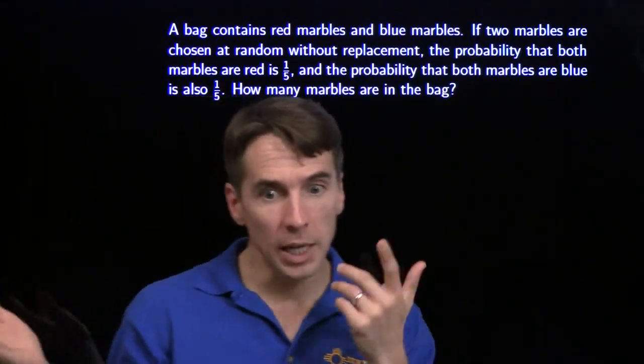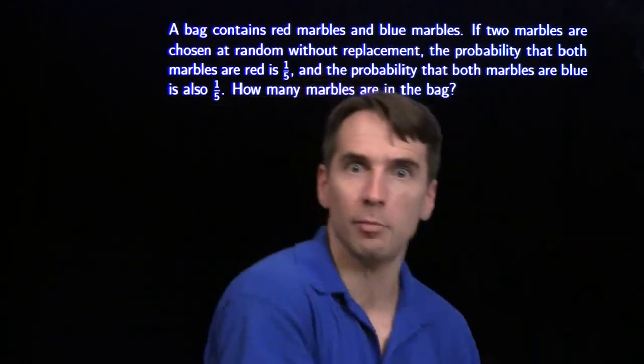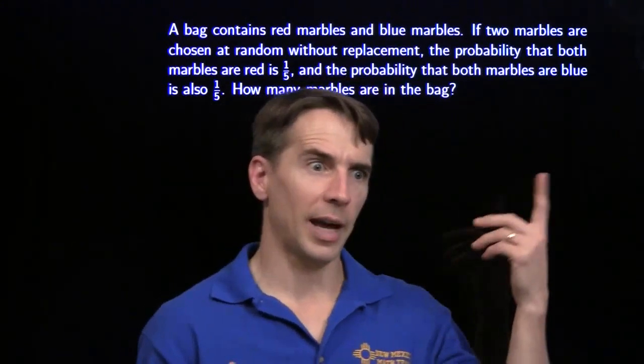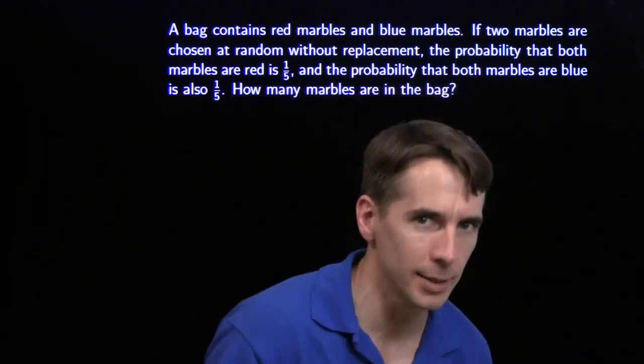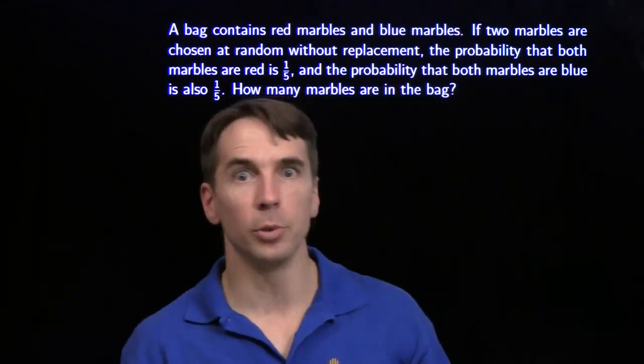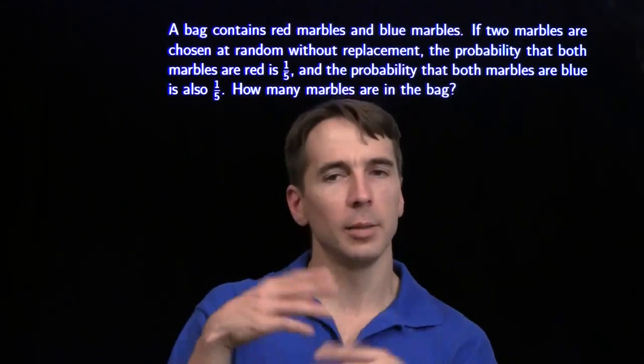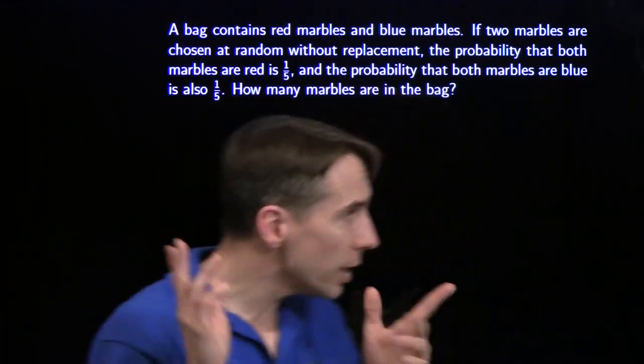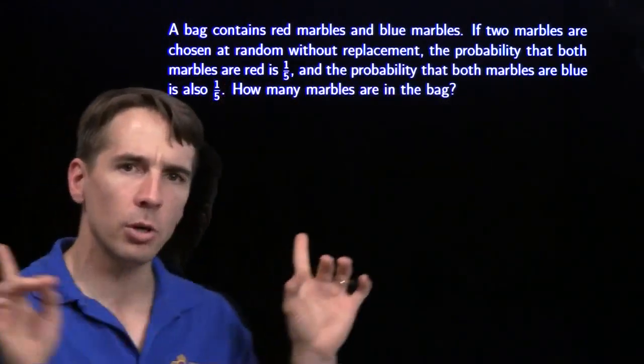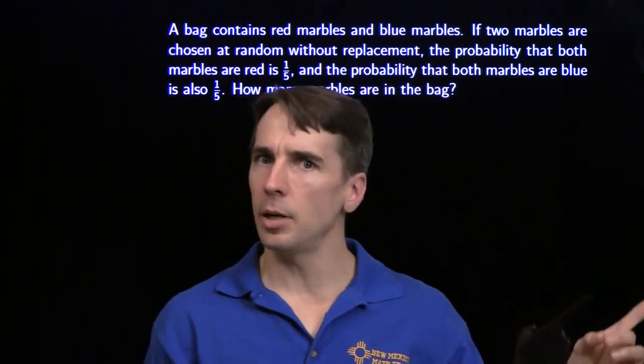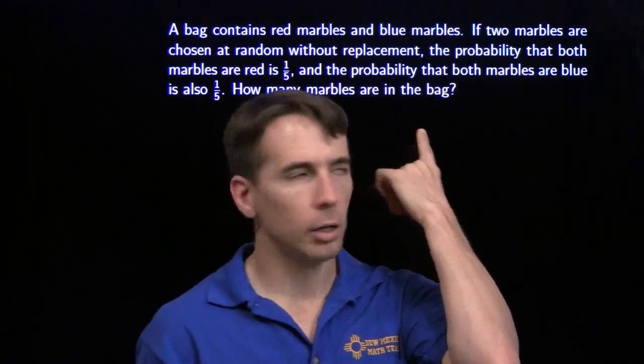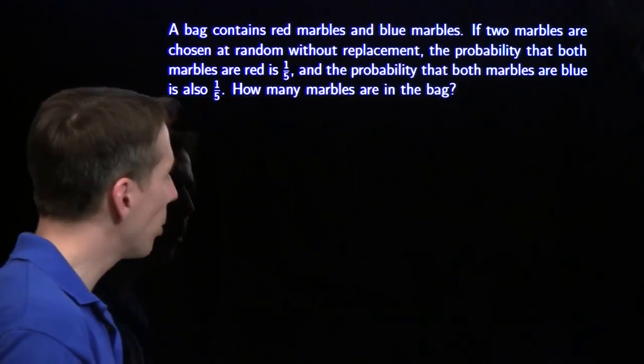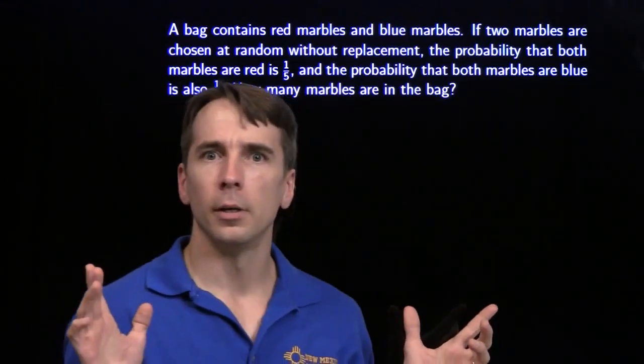What do these probabilities tell us? Well, the probabilities are the same. That tells me I have the same number of red marbles as I have blue marbles. Because if I had more blue marbles, there would be more ways of getting two blues than of getting two reds. Which means the probability of getting two blues would be higher. Basically the same thing the other way around. But the probabilities are the same, so the number of reds is the same as the number of blues. We still don't know how many there are. That's what we need to figure out. The number of marbles in the bag is still unknown.